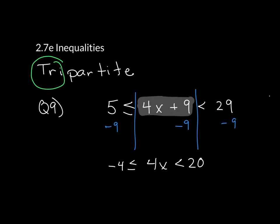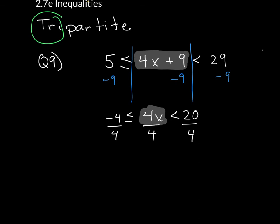Now I want to get 4x to have a coefficient of 1. I want to have x all by itself, so I divide all three pieces by 4. And now I have negative 4 divided by 4. Because I'm dividing by a positive 4, nothing changes. Don't change the direction of the inequality. So that just stays as negative 1 is less than or equal to x, which is less than 5.